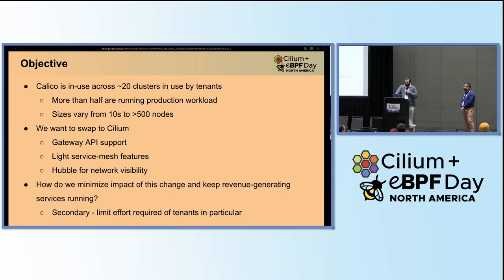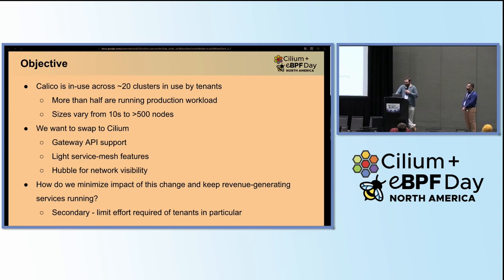Our primary considerations when planning the migration were centered around finding a path with the following characteristics. Ideally, we'd have no impact to our services that are generating revenue. We also wanted the migration to be largely transparent to end users. Some awareness and readiness for the change was expected, but we didn't want to impose any significant amount of work on our users of the platform. And lastly, not having to have the platform team perform some marathon migration — working overnight, anything like that. Having good, controllable rollout was important.